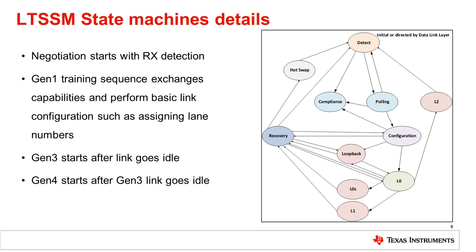In forwarding mode, a retimer is purely an analog device, and it's retiming the data at the highest data rate negotiated. At the same time, a retimer is continuously checking for training sequences at L0, looking for commands such as loopback. If one end of the link has an interruption, possibly caused by bit errors, a recovery state is initiated, and link partners go into electrical idle before the speed change occurs. Once the speed change occurs, Rx and Tx link equalizations are performed, and into forwarding mode.